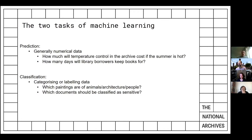We can break machine learning tasks into two main categories: prediction or classification. Prediction is generally with numerical data, such as predicting temperatures — numerical values — which we tend not to use as much in GLAM settings, but there are certainly areas where it applies. Most of what we're doing is classification: labelling pictures by what type they are, or documents by what kind they are.